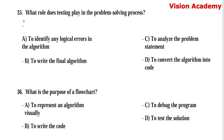Question number 35: What role does testing play in the problem-solving process? Option A, to identify any logical errors in the algorithm. Option B, to write the final algorithm. Option C, to analyze the problem statement. Option D, to convert the algorithm into code. Here, option A, to identify any logical errors in the algorithm, is the right answer.